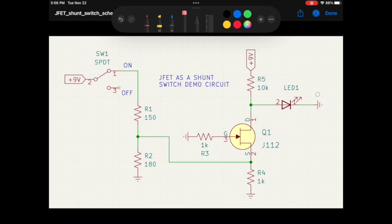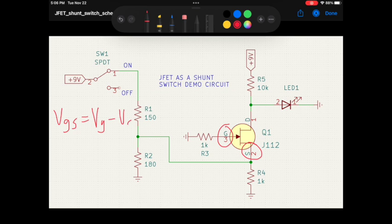Well, your JFET faucet is controlled by the voltage difference between the gate and the source, which we'll call VGS. In this case, VGS is defined as the voltage at the gate minus the voltage at the source. When this voltage is zero or positive, our water faucet is turned on. The JFET acts as a low-resistance device, around 100 ohms, and current flows through the JFET to ground.